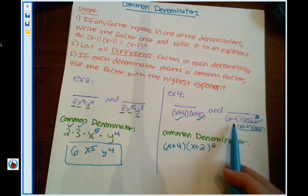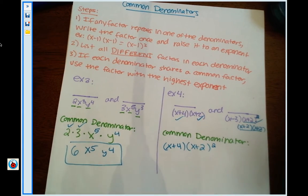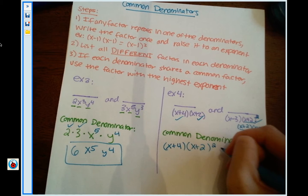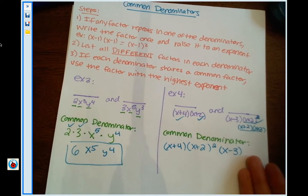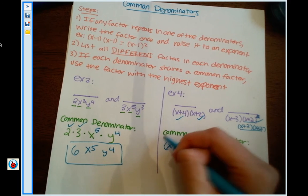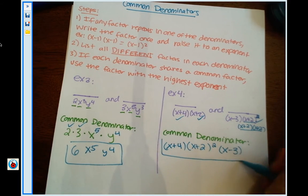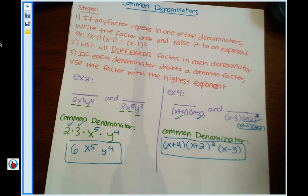So now my x plus 2's are taken care of. So the only thing left is x minus 3 and it's not shared between my denominators. So I'm just going to list x minus 3. And they're already all multiplied together, so guess what? This is my common denominator.